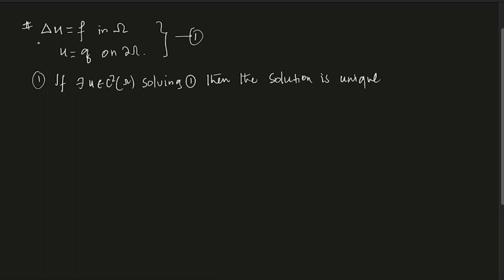We also saw that if you need to find a solution, you look at a corresponding energy functional — which is one-half of ∫∇u·∇w minus the integral of fw — and on the admissible set where u equals g on the boundary, if you minimize that energy functional, you get the solution of the problem.